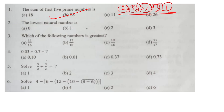The lowest natural number is 1. The whole number is 0. The combination of 0 and natural numbers is whole number.